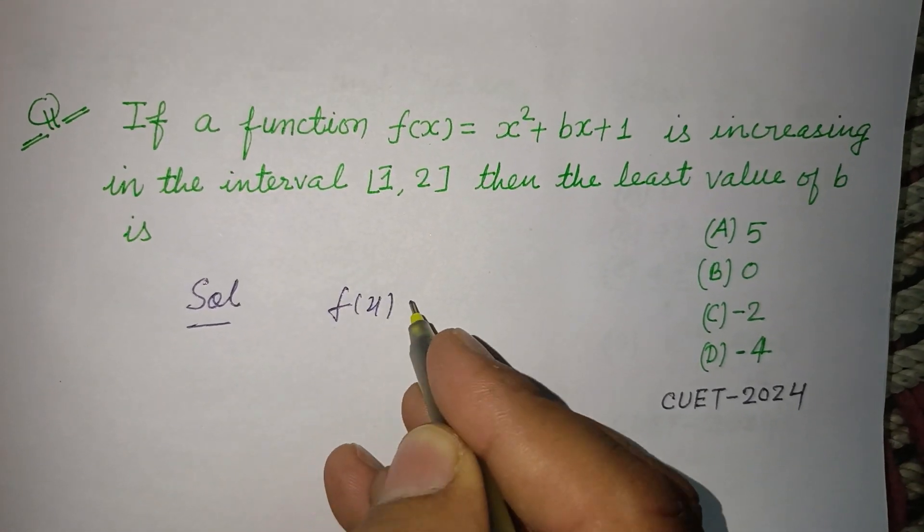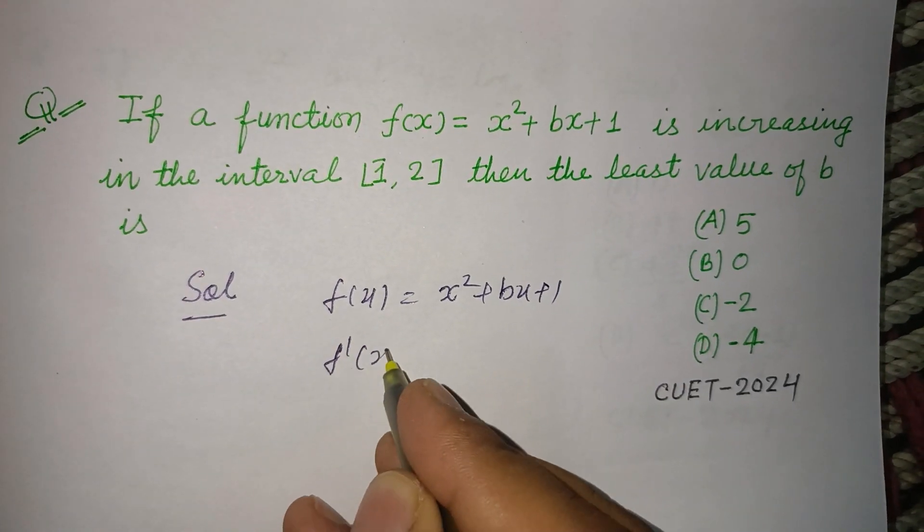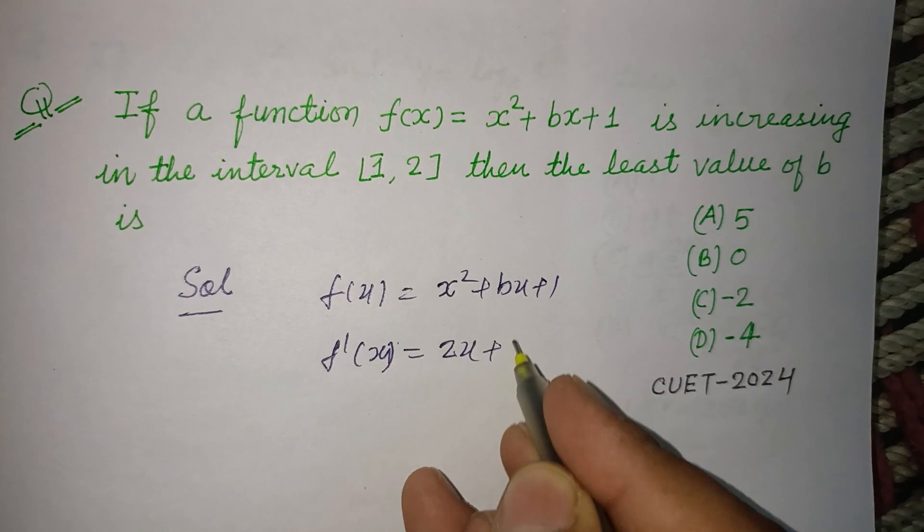Which is x² + bx + 1. Now differentiating this with respect to x, this is 2x + b.